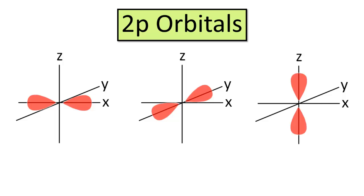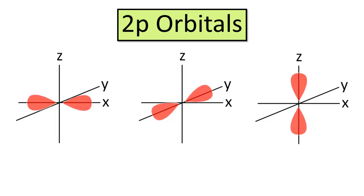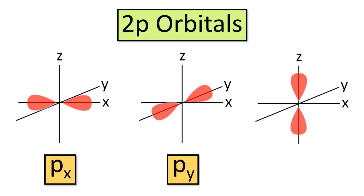Notice that the p orbitals are orthogonal, which means that they are mutually perpendicular. So oftentimes they'll be shown as oriented along the x, y, and z axes, and will be given the names px, py, and pz. P orbitals in higher principal levels have roughly the same shapes as the 2p orbitals, but they're larger in size and they have more nodes.